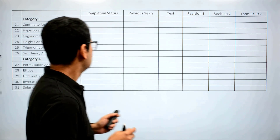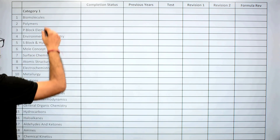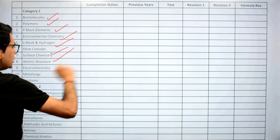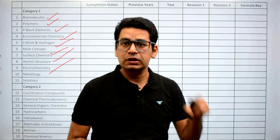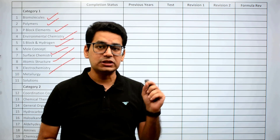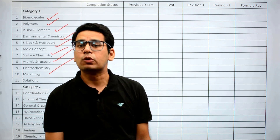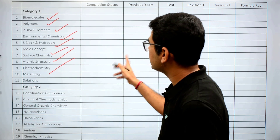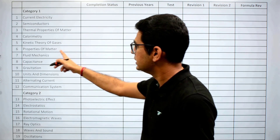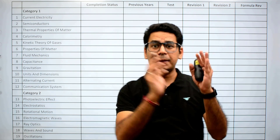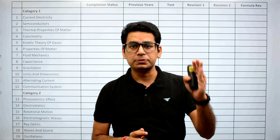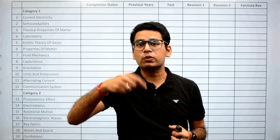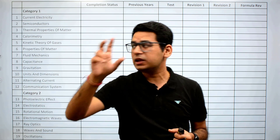Similarly, there is a sheet for chemistry — biomolecules, polymers, all the category one topics. Students who are new and do not know how we have categorized them, please watch the video 'How to get 200 plus in JEE Mains.' There is also a sheet for physics. So three sheets on your study table printed will give you the exact picture of what is happening. You will also get to calculate how many chapters you have saved and how many topics you have covered.